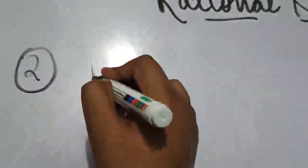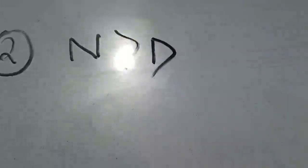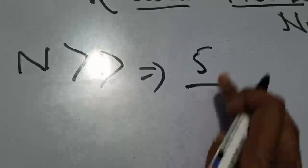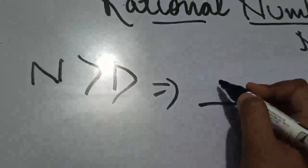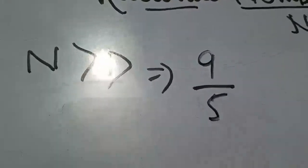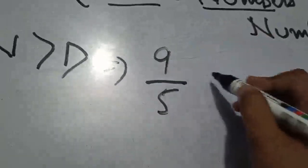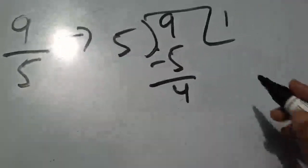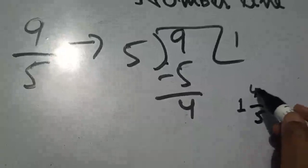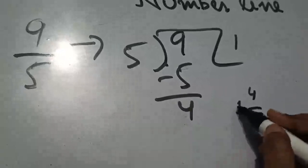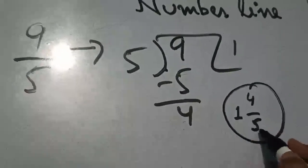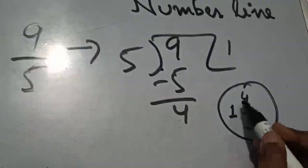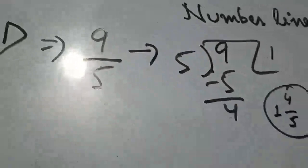Next condition: jahan numerator bada ho denominator se. Example lete hain — 9 by 5. Numerator bada hai, to is condition mein pehle ise mixed number mein convert kar lete hain. Sabko mixed mein convert karna aata hoga. 9 by 5 ko mixed mein convert kiya to 1 whole 4 by 5 aaya. Cross-check: divisor 5, quotient 1, remainder 4 — 5 times 1 plus 4 equals 9. Sahi hai.